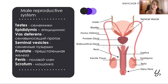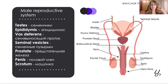Male reproductive system. Here we have the testes, epididymis, then the vas deferens, also called ductus deferens. Also seminal vesicles, the prostate gland or prostate, the penis, and of course the scrotum as an external organ.